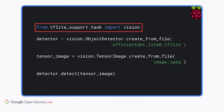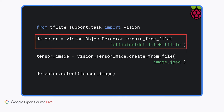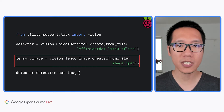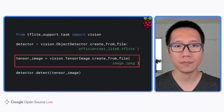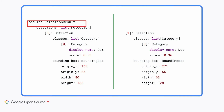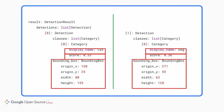Let me show you how to integrate the object detection model into your Python application using the Task Library Python API. Start by importing the vision module from the Task Library, then initialize an object detector with the TensorFlow Lite model you downloaded from TensorFlow Hub. Next, prepare a TensorImage and load it from a file using the createFromFile function, then call the detect function on the tensor image. The detect function returns a list of detection objects each containing the object name, confidence score, and bounding box. In just five lines of code, your Python application can detect 70 different types of objects.